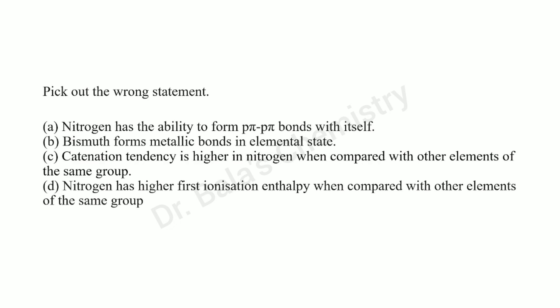The nitrogen-nitrogen single bond is unstable; the nitrogen triple bond exists and is stable. So C is the right answer — the statement that catanation tendency is higher in nitrogen compared to other elements of the same group is the wrong statement.